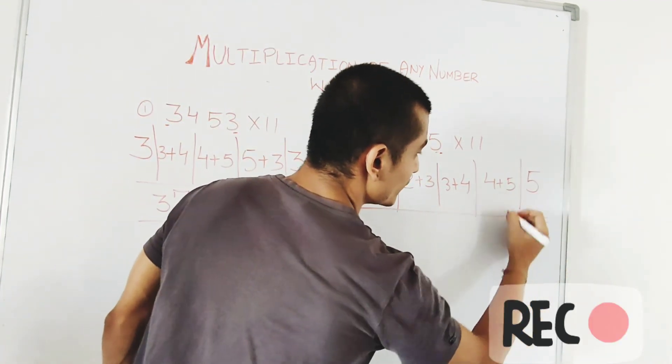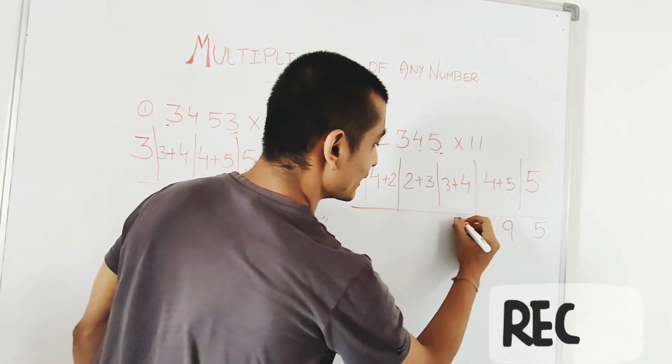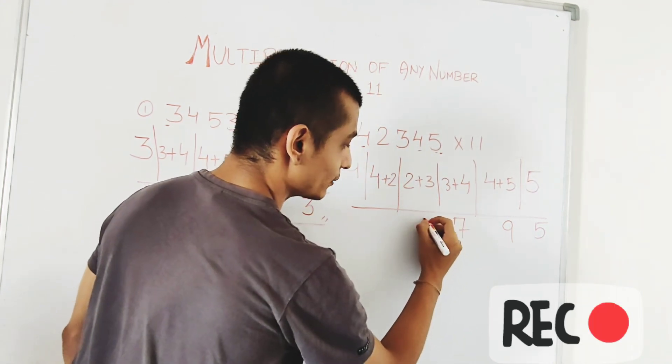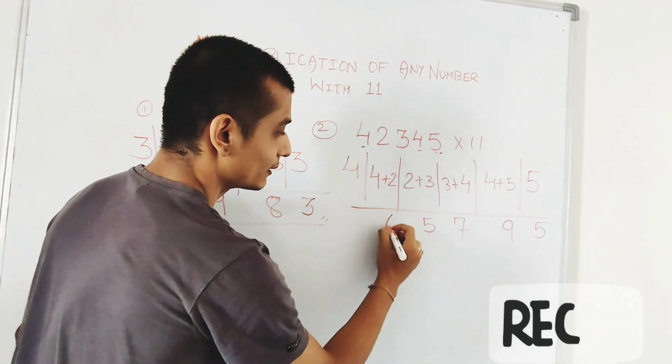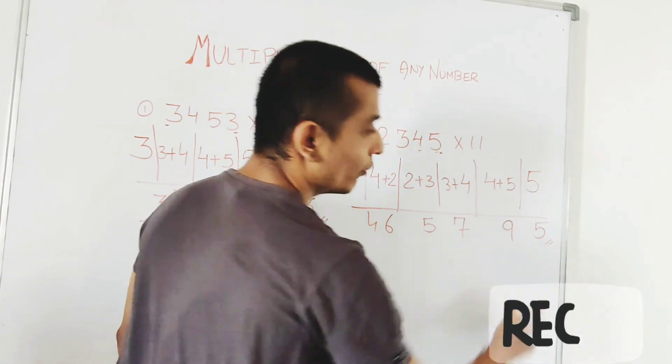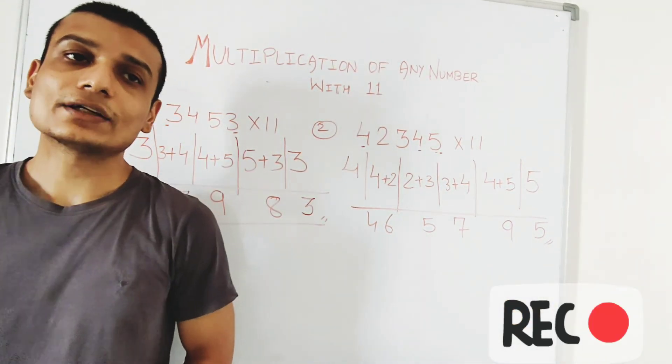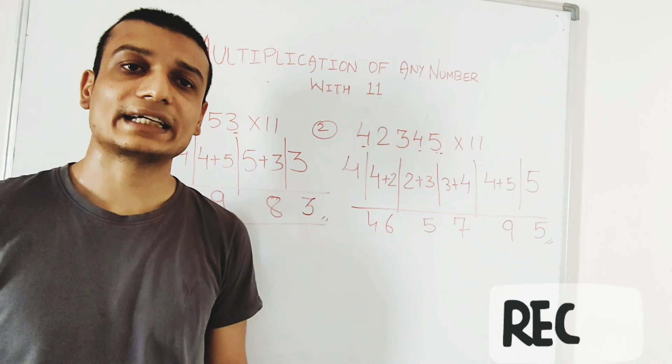Five. Four plus five is nine. Three plus four is seven. Two plus three is five. This is six and four. Hope you all have enjoyed today's trick. Thank you, have a nice day, stay at your home, stay safe.